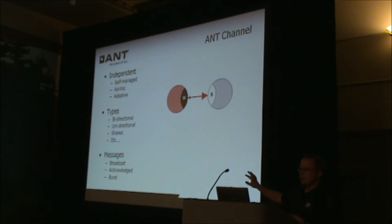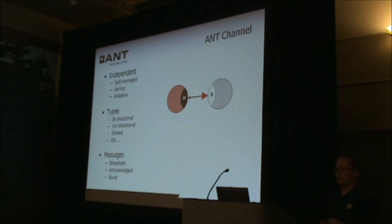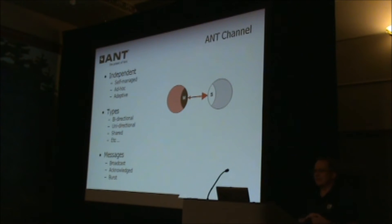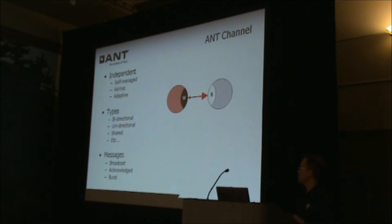ANT channels are represented by an arrow. One side has a big head and the other has a small head. The large arrow goes in the direction of the primary transmitter — the master side — and the small arrow goes toward the primary receiver. There are different types: bidirectional channels, unidirectional channels, and shared channels where multiple ANT nodes share a single channel, among other derivatives.